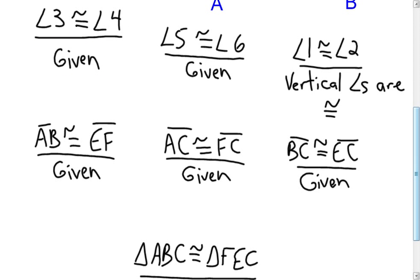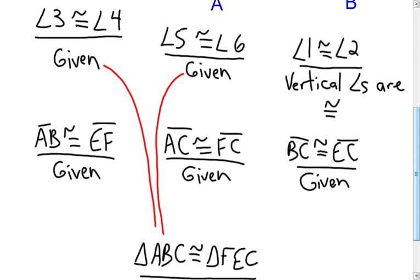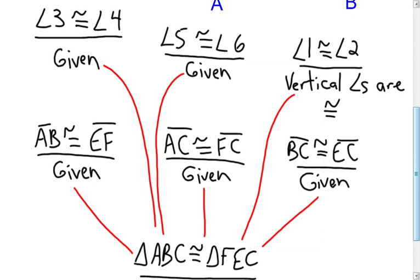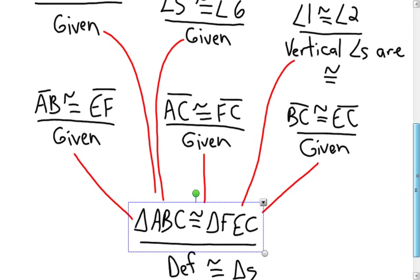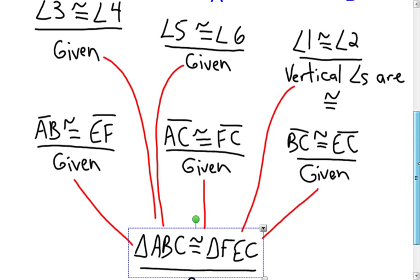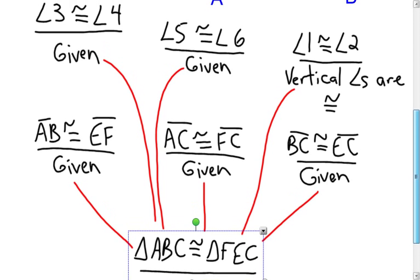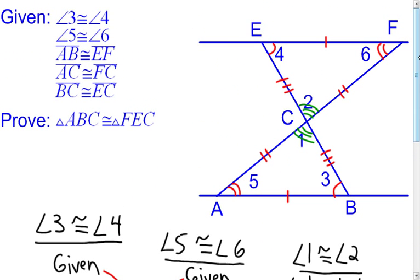Triangle ABC is congruent to triangle FEC. My reason, the same as the last proof, is the definition of congruent triangles. In the flow proof, I need to connect all the statements that were needed to say the final one. I needed to know that angle three and four were congruent, angle five and six, angle one and two, segment BC and EC, segment AC and FC, and segment AB and EF — all connected with arrows. These connectors are like reference numbers in a two-column proof. Everything needed to support a statement must be connected to it. That's the flow proof proving those two triangles are congruent.